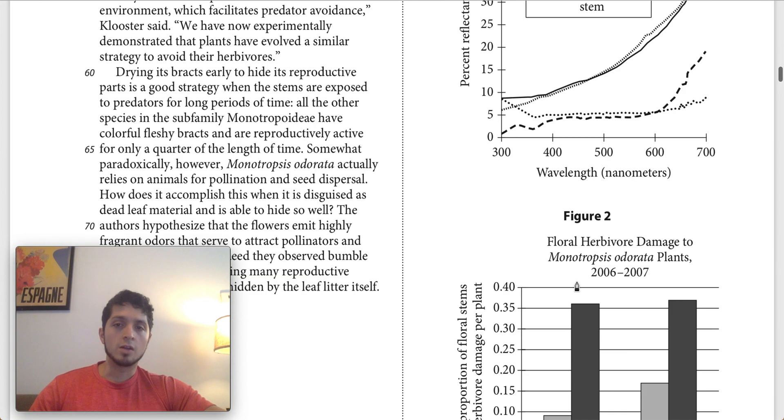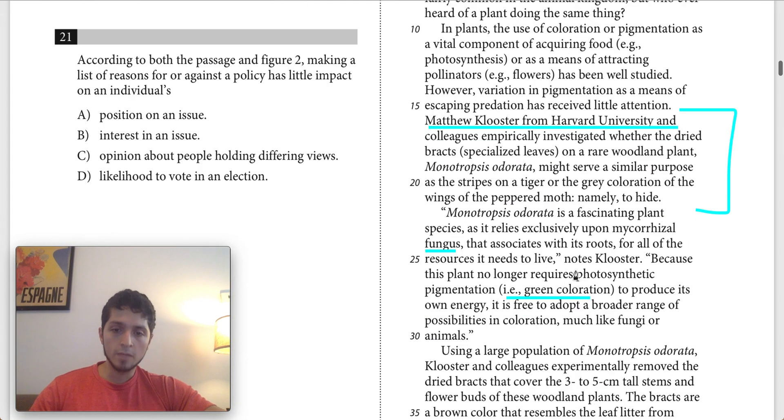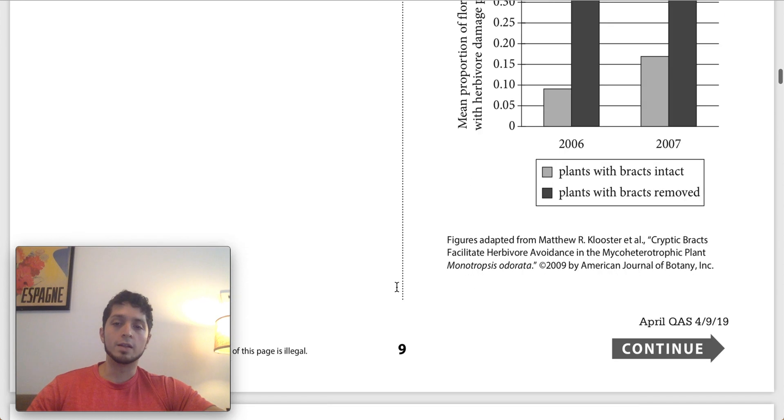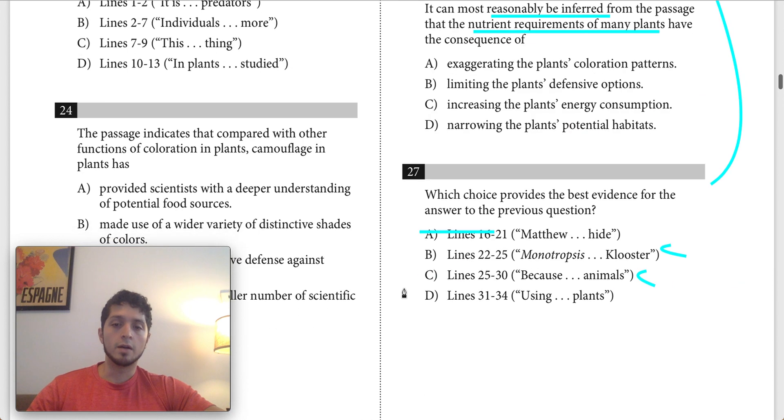Then we have D, which references lines 31 through 34. Using a large population of monotroposis odorata, Klooster and colleagues experimentally removed the dried bracts that cover the 3 to 5 centimeter tall stems and flower buds of these woodland plants. This is talking more about the methodology that Matthew Klooster used in his study. It's not really telling us anything about how these plants get nutrients. So let's get rid of D.